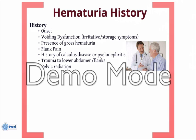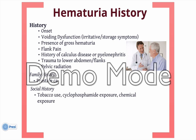Also, a history of trauma to either the flanks or lower abdomen could injure the urinary tract significantly enough to cause hematuria. In addition, inquiring about a family history of prostate cancer, history of tobacco use, history of cyclophosphamide exposure, history of pelvic radiation, or history of any significant chemical exposure.